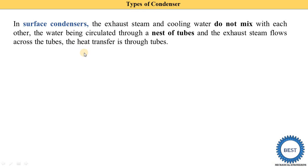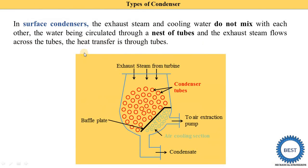Here you can see one type of surface condenser. There are tubes, and water is supplied through the tubes. The exhaust steam from the turbine is passed outside the tubes, while the cooling water is passed through the inside of the tubes. Heat transfer takes place through the tube walls. The steam and cooling water are not directly mixed, so it is called indirect type heat transfer.